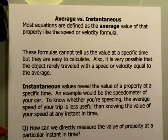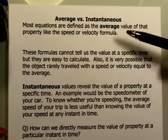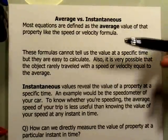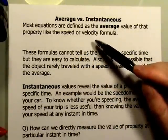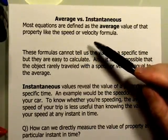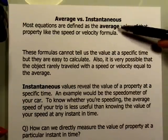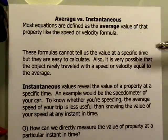Let's discuss the difference between the average value of a property and the instantaneous value of a property — for example, the speed or the velocity formula. The formulas that you've learned so far, and virtually every formula that you'll learn in physics, is the formula for the average value of that property.